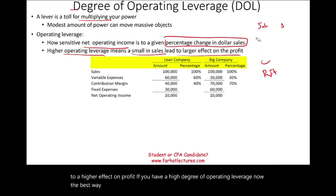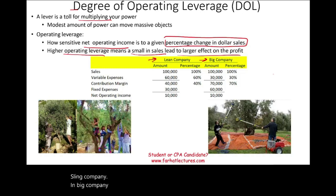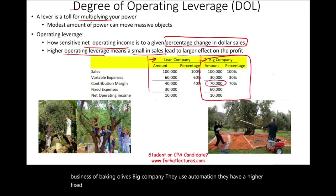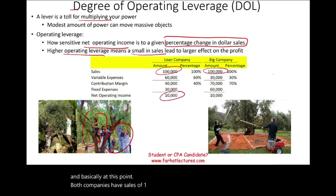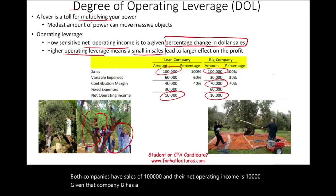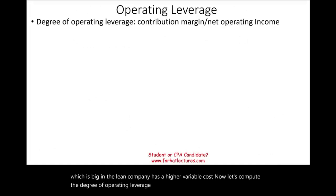The best way to illustrate this is to look at an example from a numbers perspective. We're going to work with lean company and big company, which we used when we talked about cost structure. Both companies are in the business of picking olives. Big company uses automation and has a higher fixed cost. Lean company relies on labor and has a lower fixed cost. Currently, both companies have sales of $100,000 and net operating income of $10,000. Let's compute the degree of operating leverage for each company.